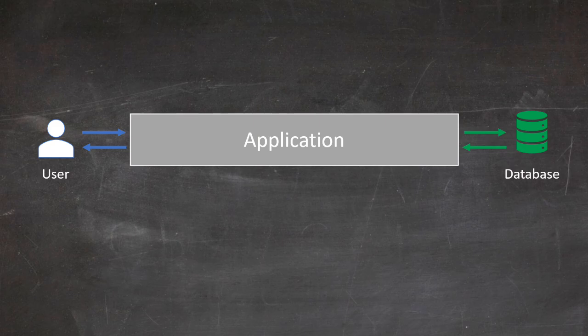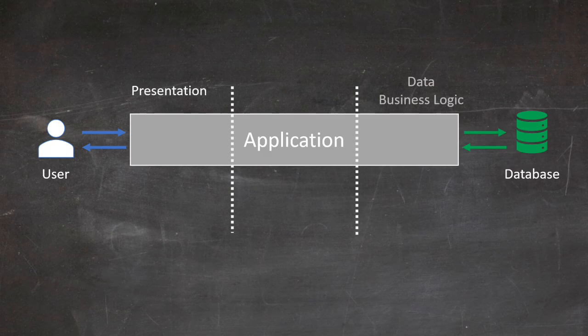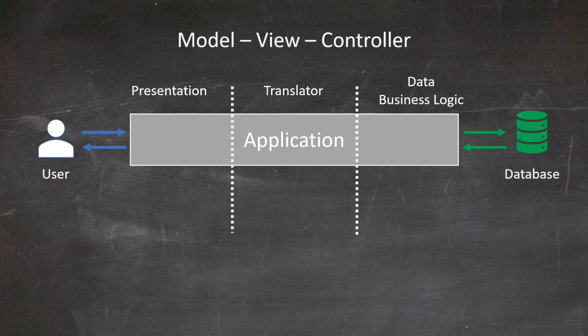In fact, our predecessors already knew this design will not scale. And so, they smartly decided to organize an application into different layers that were not so tightly coupled — with a presentation layer, a data and business logic layer, and a translator layer in between, effectively creating what we know today as the model view controller design pattern.